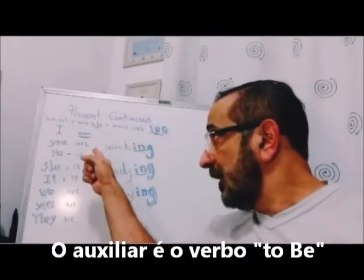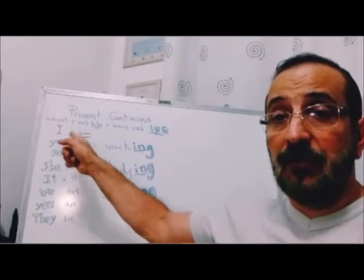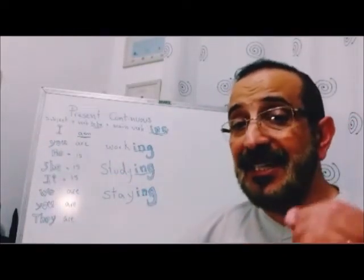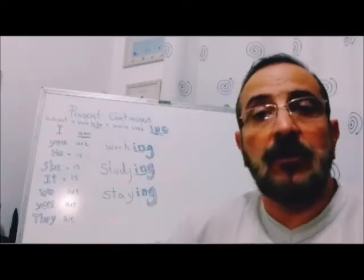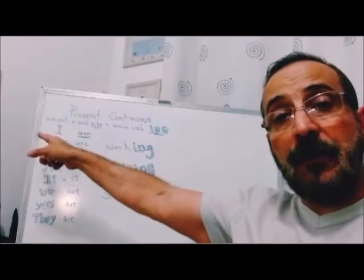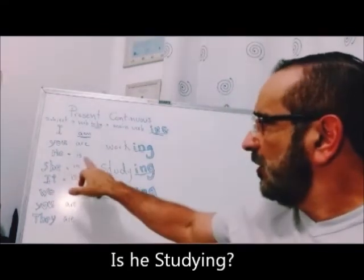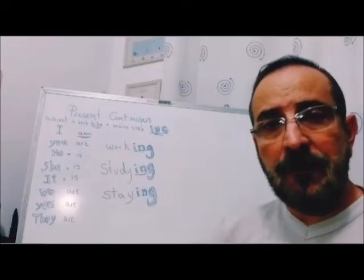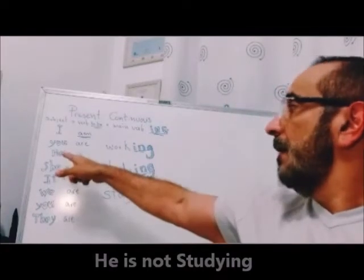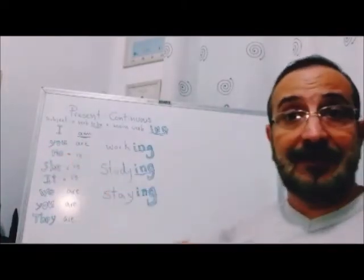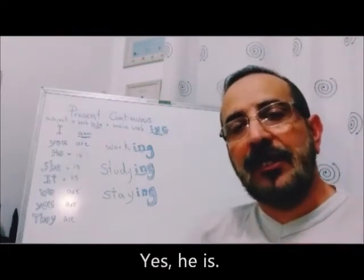E um detalhe: o nosso auxiliar, caso eu queira fazer uma pergunta, é o verbo to be. Ou seja, eu simplesmente vou jogar ele para frente do meu sujeito — seja esse sujeito I, you, he, she, it, ou o nome de alguém. Vai no início para perguntar. Is he studying? Só fiz uma inversão. No — He is not studying. He should be — ele deveria estar. But, se ele estiver: Yes, he is. He is studying — ele está estudando. Isso é o present continuous.